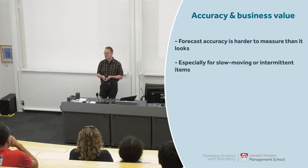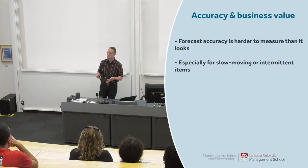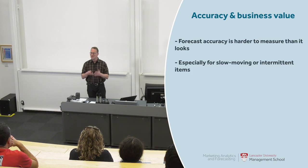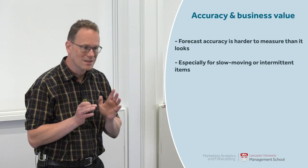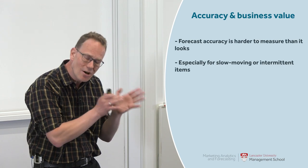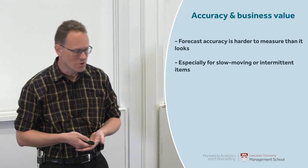Especially when it comes to slow-moving or intermittent products — products that only sell rarely — if you want to forecast those and measure your accuracy, you can be led astray by things like the mean absolute error, which simply may not measure what you want to measure.